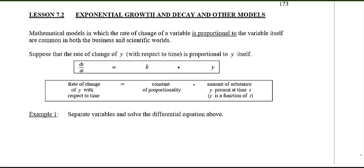So here you are at lesson 7.2 and today we want to talk about exponential growth and decay and some other models that relate to it. You've probably heard of exponential growth and decay in your pre-calculus studies. There we just gave you a formula and said use that formula and plug it in. But today what I really want to do is show you where that formula came from. It comes from this idea where mathematical models in which the rate of change of a variable is proportional to the variable itself. These are quite common in both business and scientific worlds.